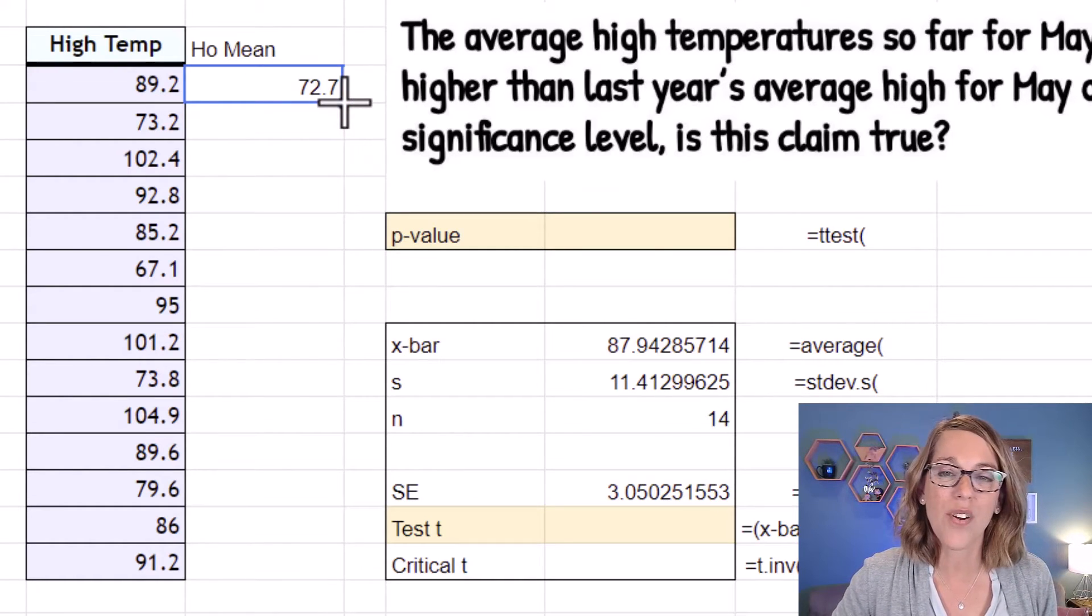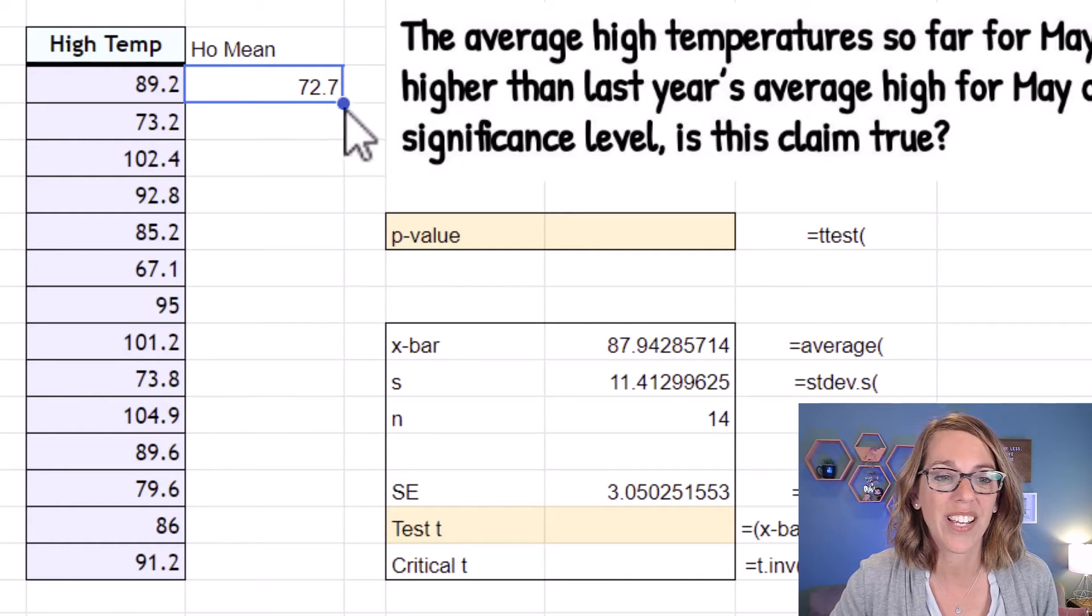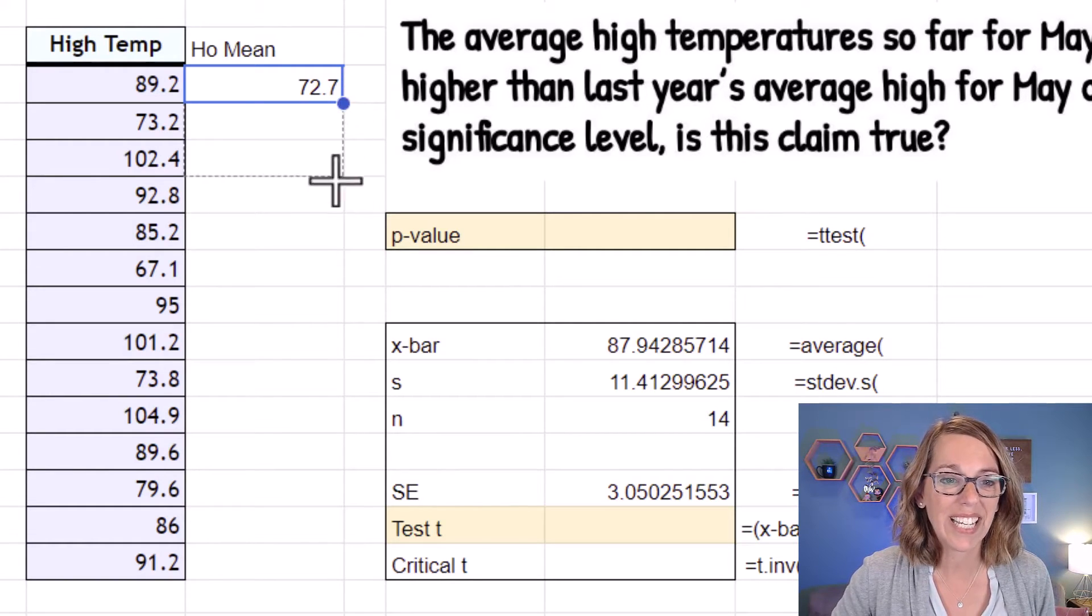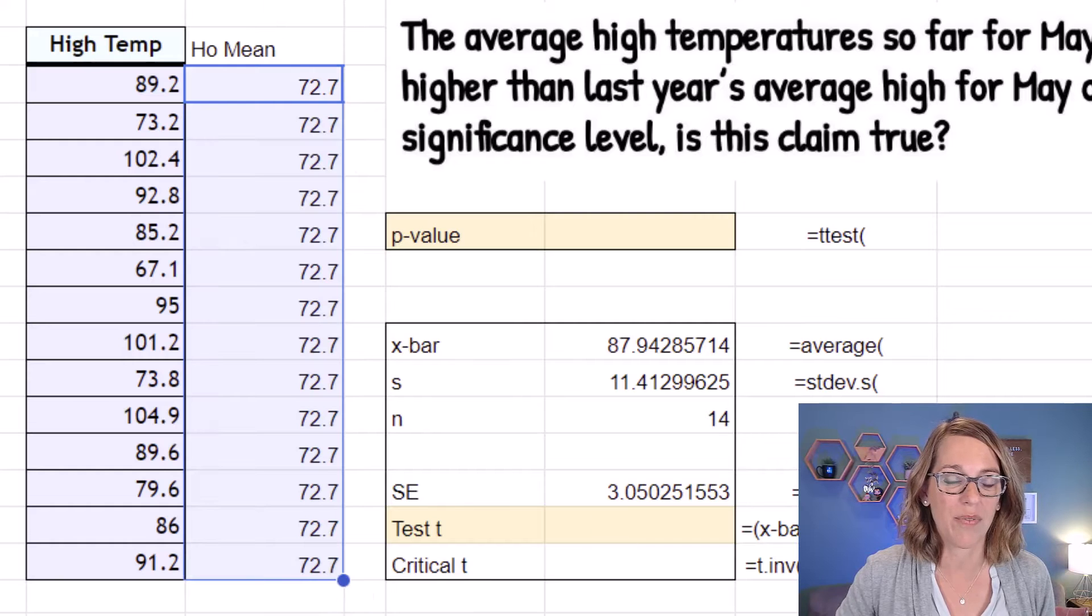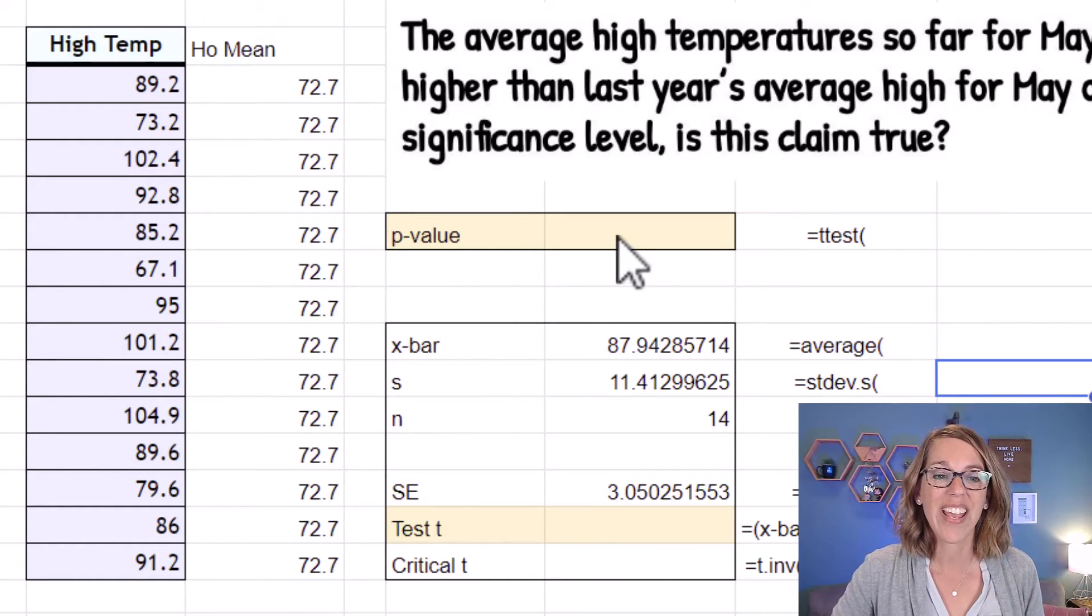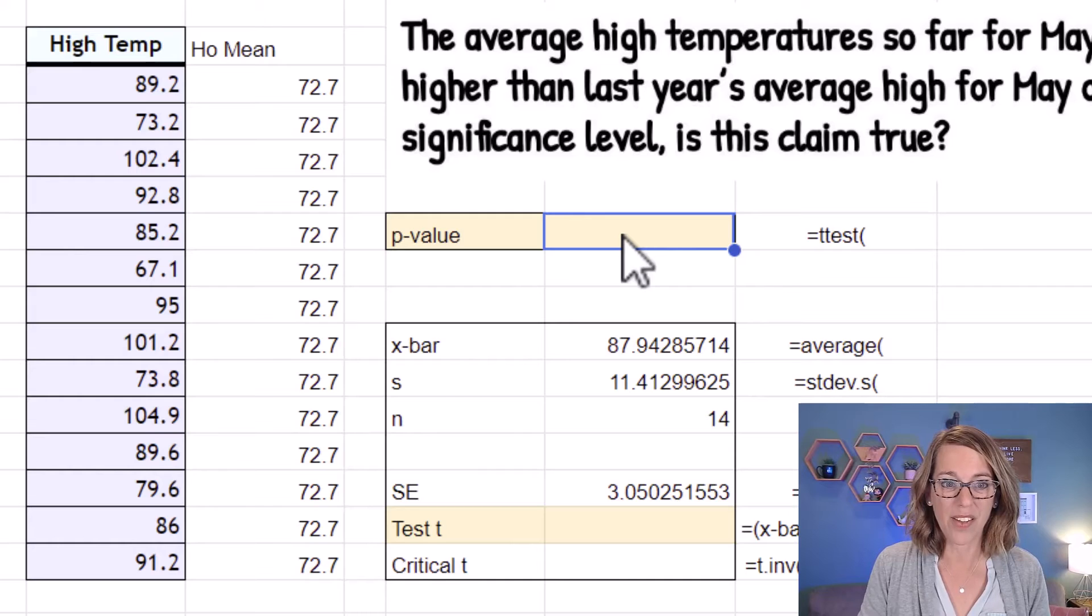I'm going to move my cursor over to the lower right corner until I get that plus sign. Click, hold, and drag all the way through. Okay, so now I've got two ranges, and I'm ready to grab that p-value.